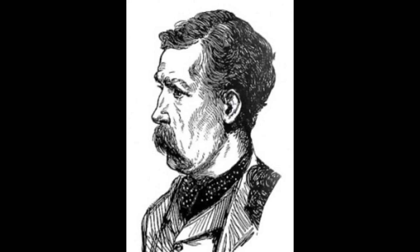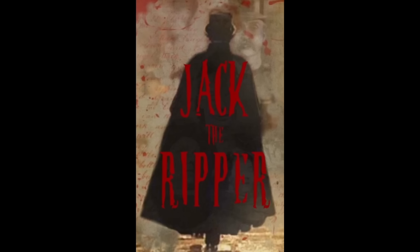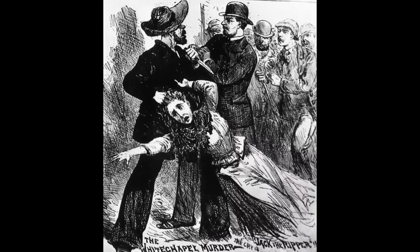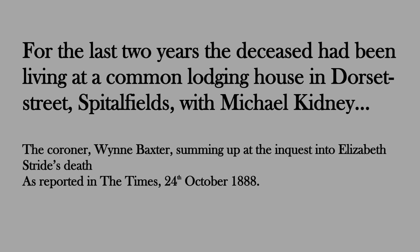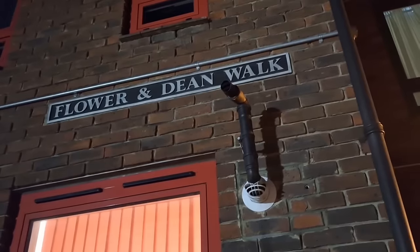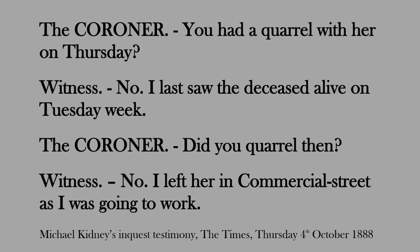Liz Stride's erstwhile partner Michael Kidney has been proposed as her killer, which is a satisfying suggestion to those who don't believe Stride was a Ripper victim. Was Liz Stride the sole victim of a domestic murder rather than part of the Jack the Ripper series? The case against Kidney is essentially that he was abusive and jealous. The evidence in favour of abuse is that Stride said she had argued with Kidney and that was why she'd moved out of their shared residence on Dorset Street into a lodging house at 32 Flower and Dean Street. Kidney denied they'd quarrelled, but perhaps he would, wouldn't he? Stride had made a complaint against Kidney for assault in 1887 but hadn't turned up at Thames Magistrates to press charges.